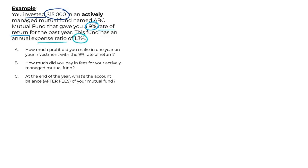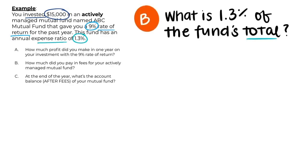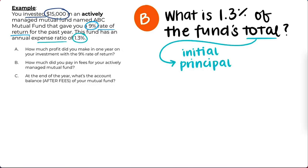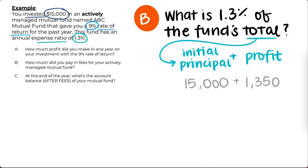Now let's look at question B, where they ask us how much we pay in management fees. The expense ratio, which is just the fancy talk for management fees, is based on the fund's total amount at the end of the year, which is equivalent to the initial investment plus the profit from the last year. This means we take our initial investment of $15,000 and add the profit of $1,350, giving us a total of $16,350.